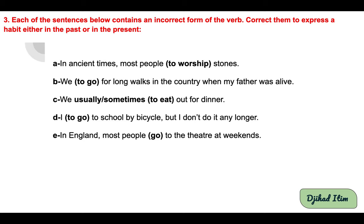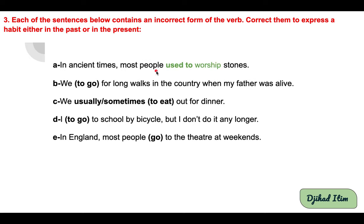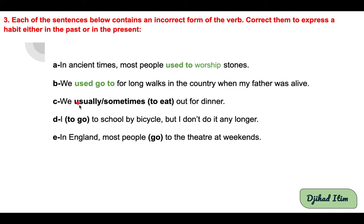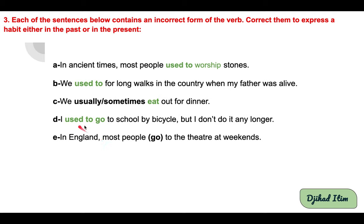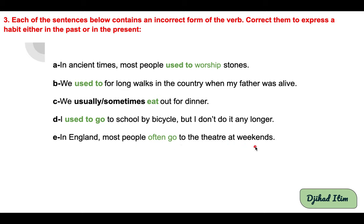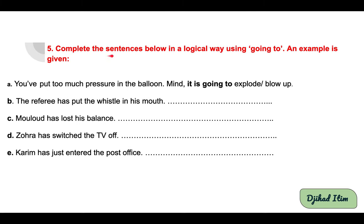Activity 3: each sentence contains an incorrect verb form — correct them to express a habit either in the past or in the present. Corrections: A — In ancient times, most people used to worship stones. B — We used to go for long walks in the country when my father was alive. C — We usually eat out for dinner. D — I used to go to school by bicycle; now I don't do it any longer. E — In England, most people often go to the theater at weekends.